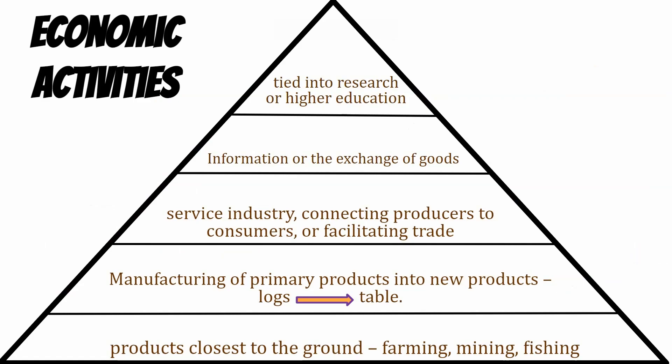First, what are economic activities? This is how people make money. There's a hierarchy of economic activities tied to different economic sectors. At the bottom, we start with primary — a group of people who do farming, mining, fishing, or lumbering. You're taking something from the ground, the sea, the earth, and extracting it.